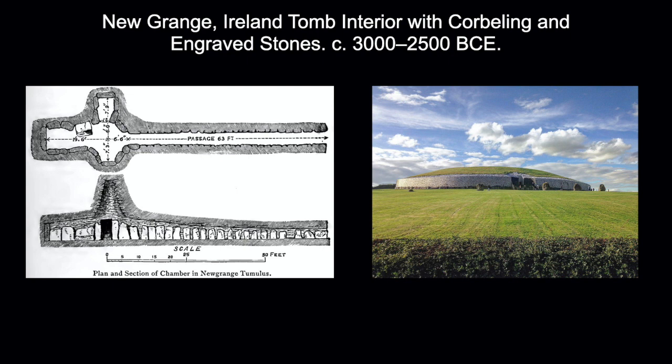A corbelled vault is a ceiling that eventually ascends into a point by stacking rocks on top of each other until they touch. These corbelled vaults were also found in the pyramids of Giza, and it's hard to know who was first — but it is amazing that this technological breakthrough happened in two distinctively different cultures. One of my favorite things about Newgrange is it shows that Paleolithic people found caves to live in, while Neolithic people actually built caves.